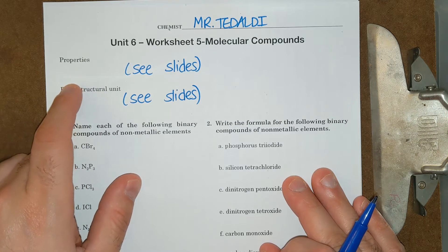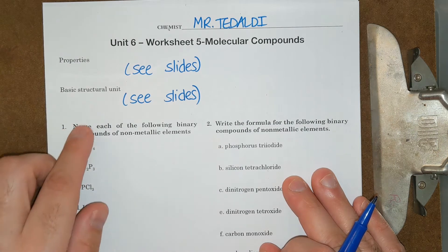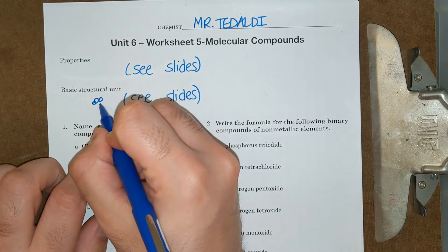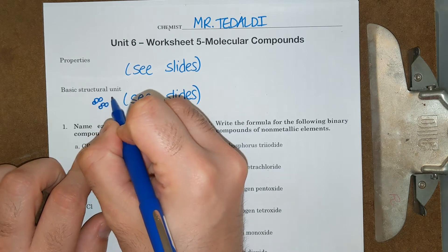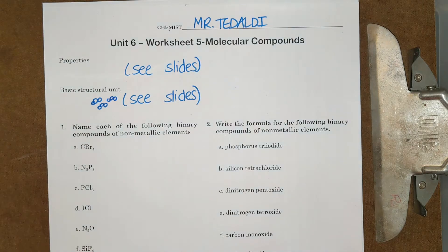Basically, molecular compounds have very low or weak properties, like they have low boiling point, low melting point, weak intermolecular attractions. The basic structural unit is the molecule, so it's something that's like just a bunch of them kind of floating around. Okay, and we'll see more of that in the future of this unit.